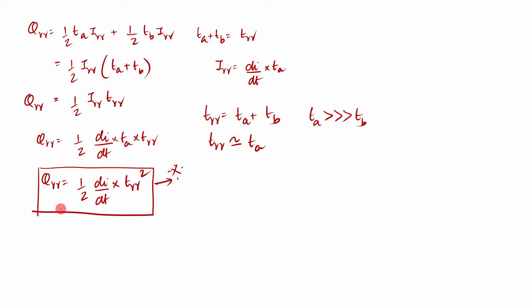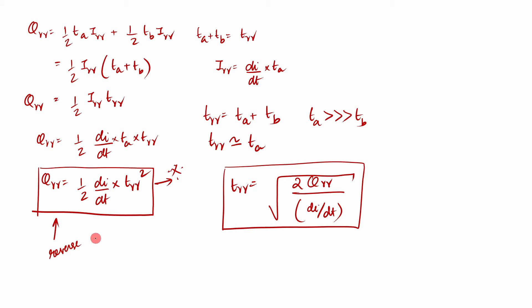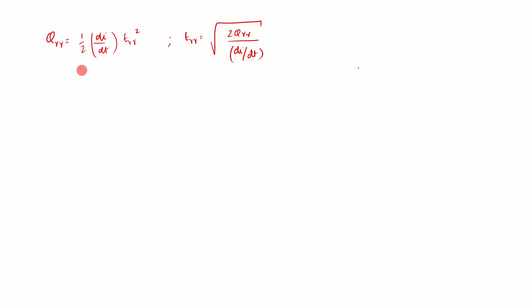From this equation we can also derive the reverse recovery time: TRR equals the square root of 2 times QRR divided by (di/dt). So we now have two important equations: QRR equals half times (di/dt) times TRR squared for the reverse recovery charge, and TRR equals the square root of (2·QRR / (di/dt)) for the reverse recovery time.